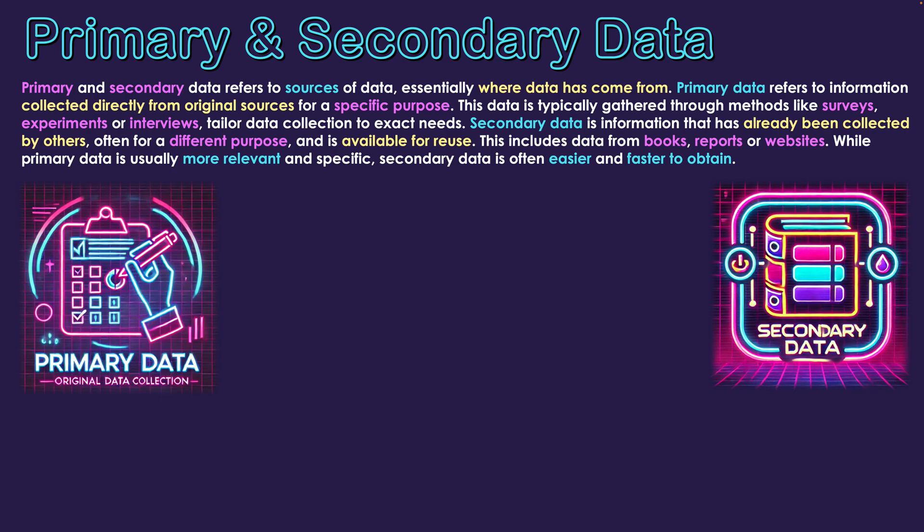These secondary forms of data come from areas such as books, reports, or websites. While primary data is usually more relevant and specific to our needs, secondary data is easier to find and faster to obtain, making it easier to get started and gauge the information that is out there. In a project, it's likely we could use both forms of data — doing our own primary research and also looking at what others in the field have done with secondary data.